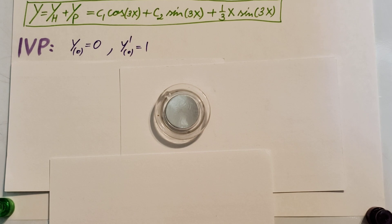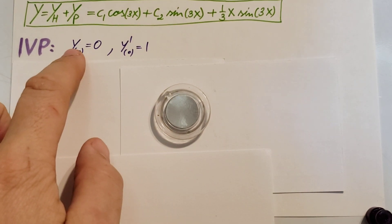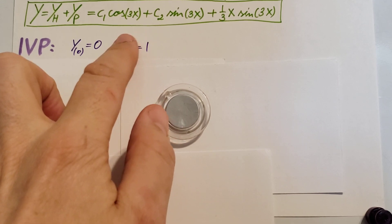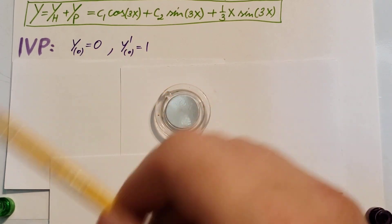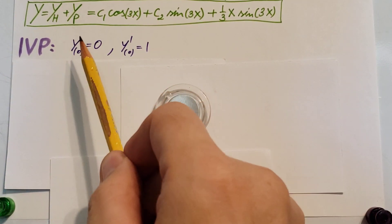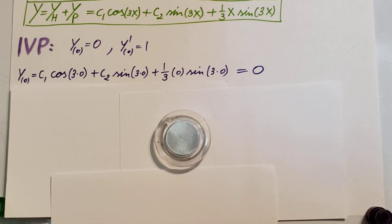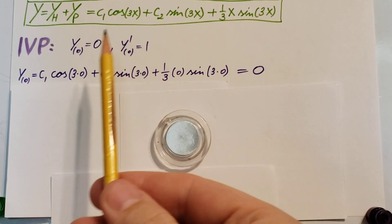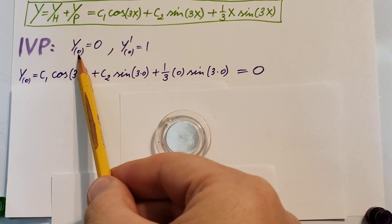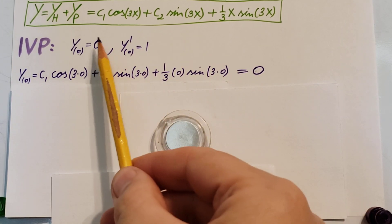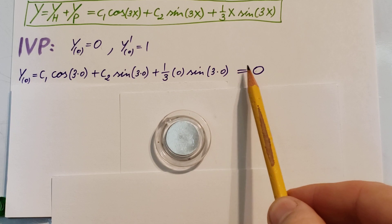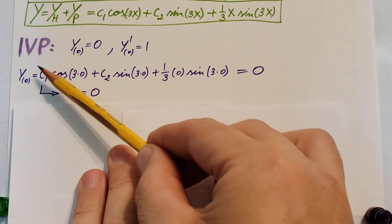Now just so we can make the problem even longer, let's pretend that this was an IVP, initial value problem, where we had Y not equals 0 and Y prime not equals 1. So in this case we're gonna have to take these two and reconfigure our final solution based on these, find the C1 and C2. First, the Y not equals 0. We're gonna take our solution and everywhere we see an X we're gonna plug this 0 in. And then as it says, the whole equation will be equal to 0. There we go. Simplify it out and we are able to find that C1 is actually 0.